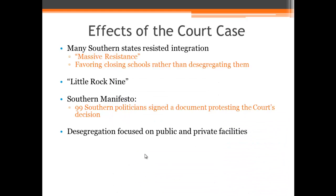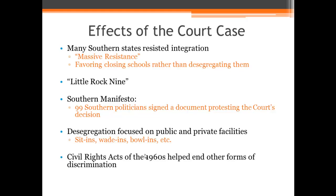After the Brown v. Board decision, desegregation began to focus on public and private facilities as well — not just schools. We'll see things like sit-ins, where African Americans would sit at all-white counters beginning in North Carolina. This idea extended to other areas like wade-ins at beaches or pools, and bowl-ins at bowling alleys, all helping to challenge discrimination laws in the South. Then we'll see the Civil Rights Acts of the 1960s that helped end other forms of discrimination, especially when it came to voting.